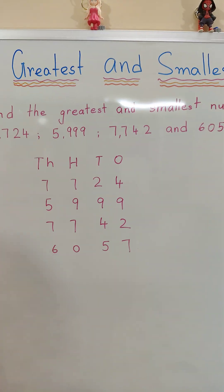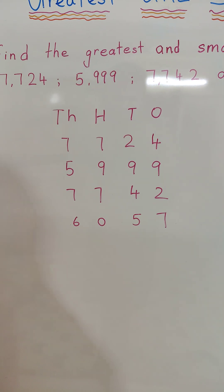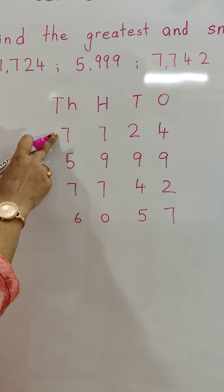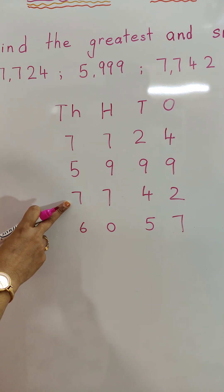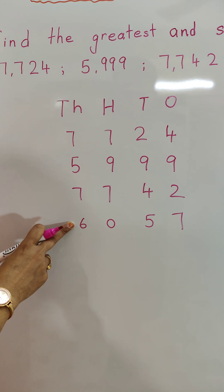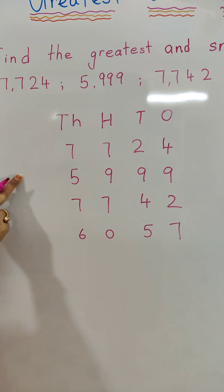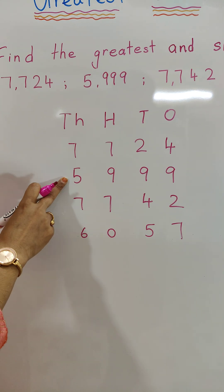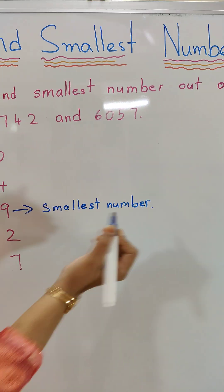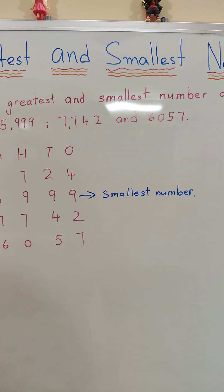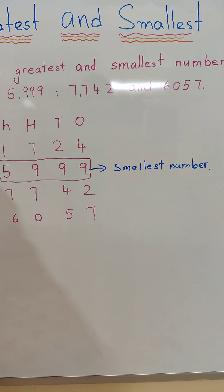First, we will compare the thousands place. In the thousands place, the first number has 7, the second has 5, the third has 7, and the last has 6. Among these, 5 is the smallest, so 5999 is the smallest number.